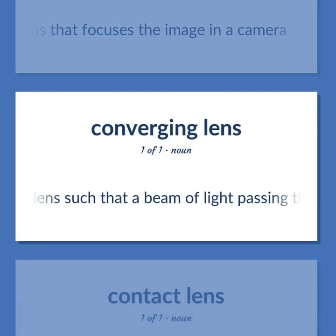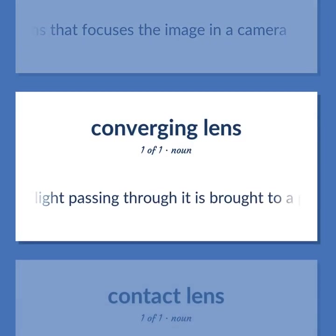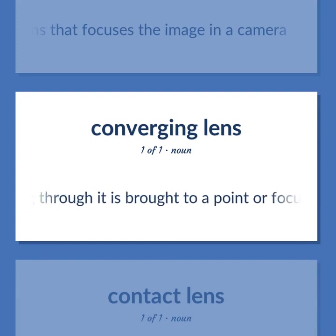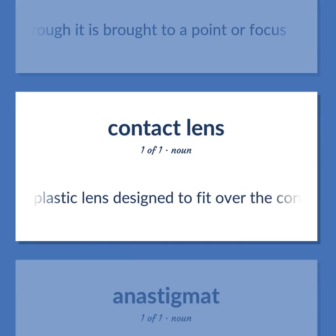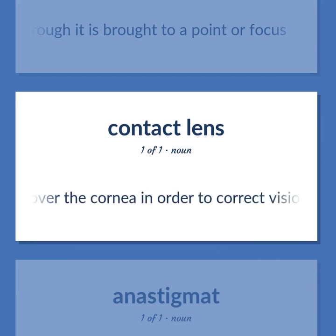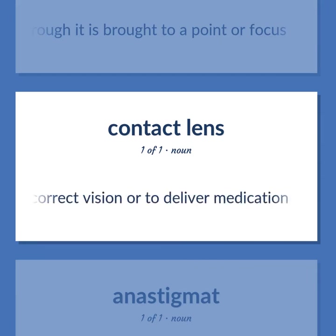Lens types: converging lens — a lens such that a beam of light passing through it is brought to a point or focus. Also: contact lens — a thin curved glass or plastic lens designed to fit over the cornea in order to correct vision or to deliver medication.